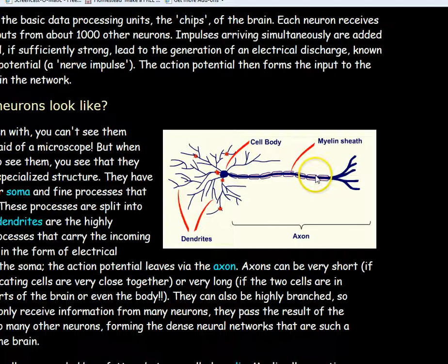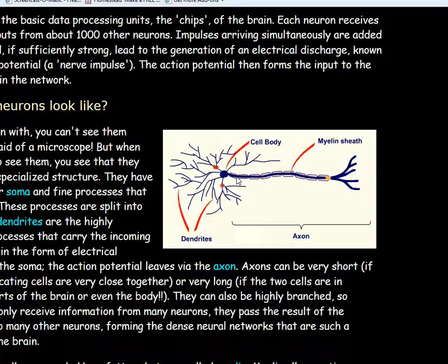Myelin also gives a white color to nerve fibers. When brain scientists talk about gray matter and white matter, the gray matter tends to be the cell bodies and their branches, while the white matter consists of myelinated fibers — especially those connecting brain cells over great distances.